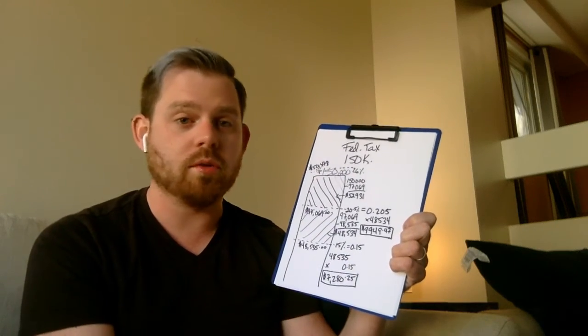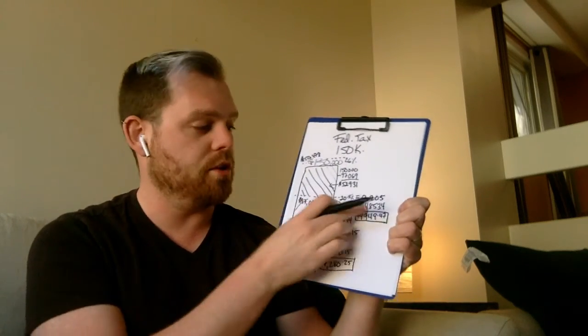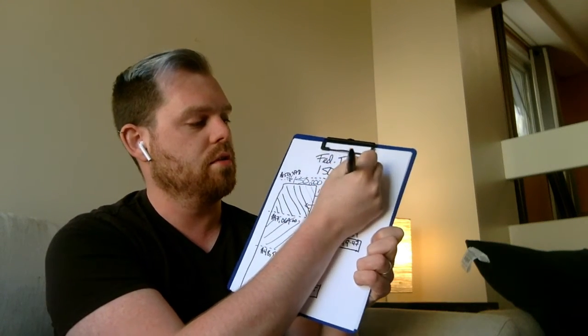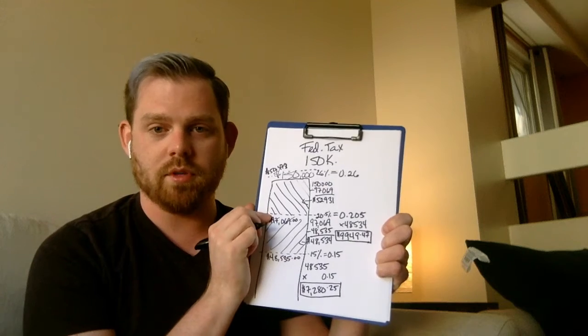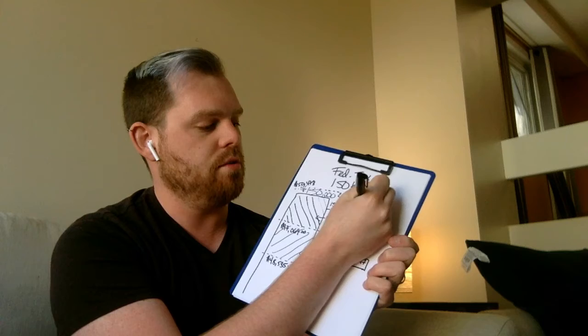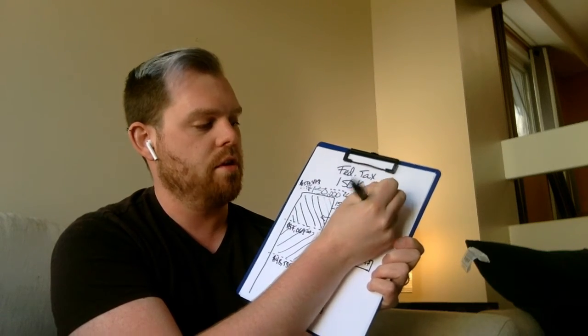Now we do the same thing as the other two levels. Convert 26% into a decimal: 0.26. Then multiply that by our $52,931. So $52,931 times 0.26 equals $13,762.06.